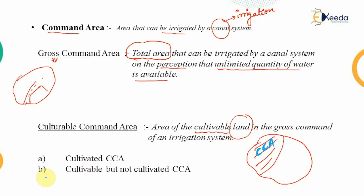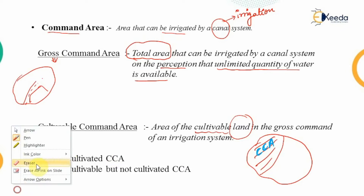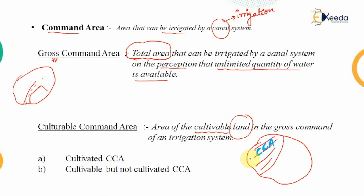Out of this culturable command area, we may cultivate upon the entire area or we may exclude some of it. If we have cultivated on only part of the land, that is known as the cultivated culturable command area. The remaining portion — where we can cultivate but it is not cultivated at the moment — is known as the cultivable but not cultivated culturable command area.